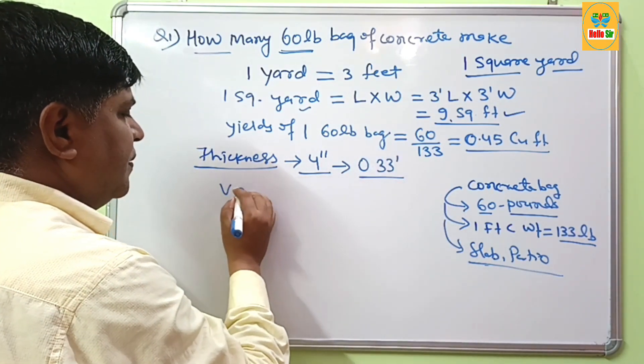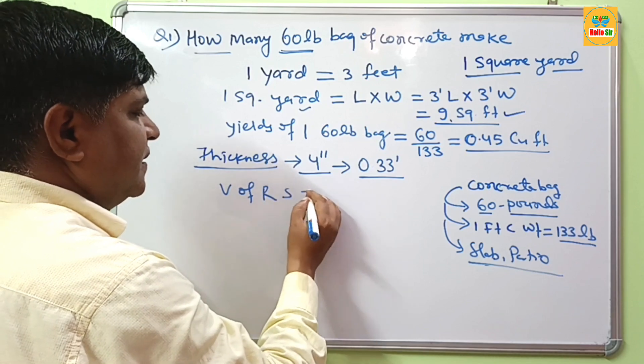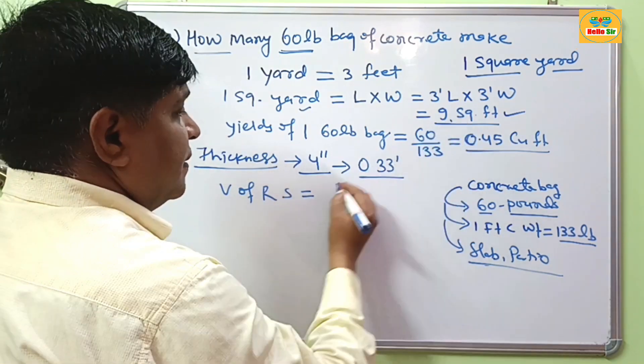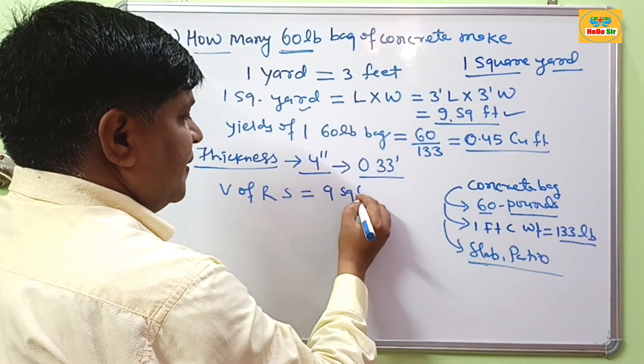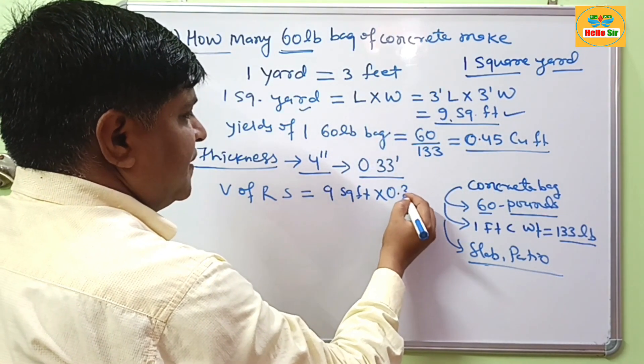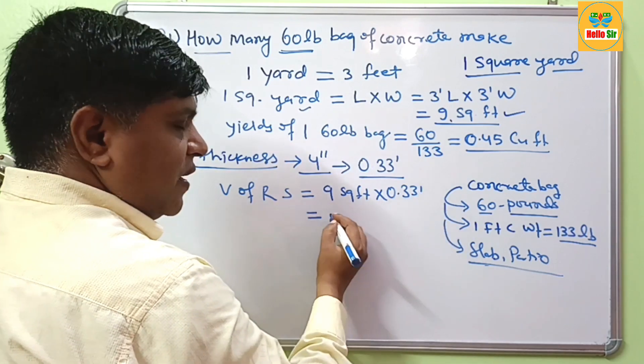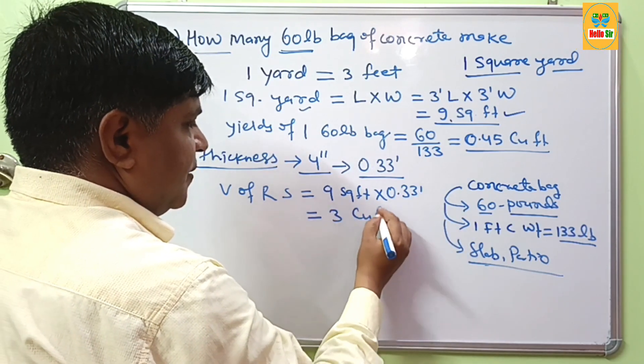And the volume of required structure is equal: here you have given 1 square yard, this is 9 square feet, multiply by 0.33 feet. This will give us about 3 cubic feet.